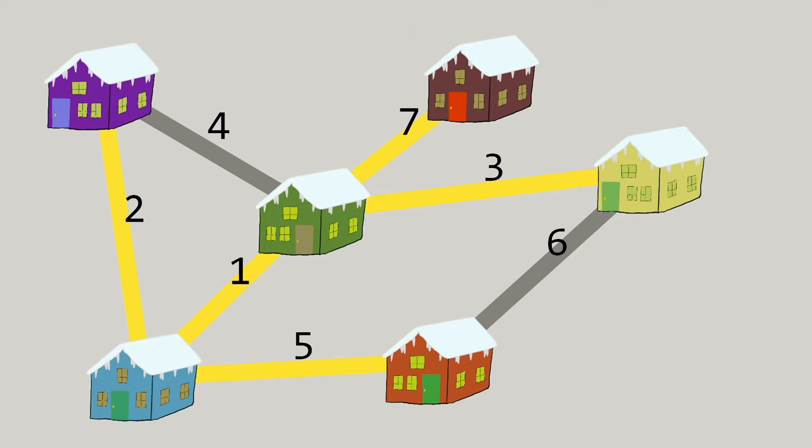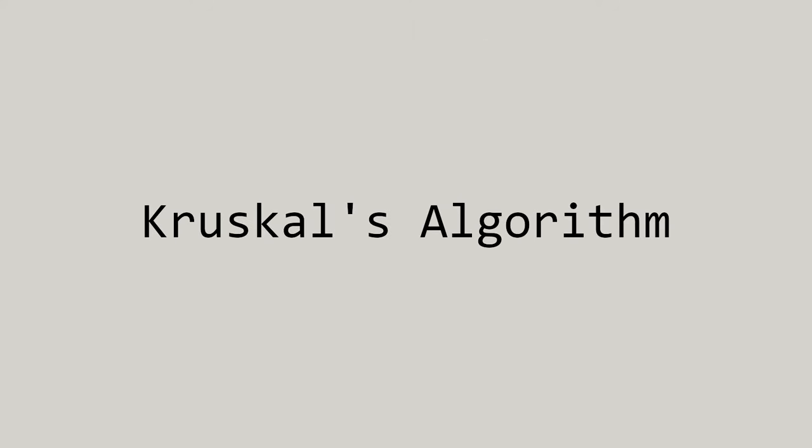This algorithm, known as Kruskal's algorithm, identifies the optimal way to choose roads. So now the question is why? Why does this algorithm work?